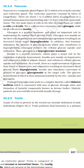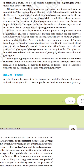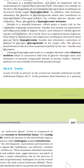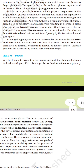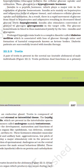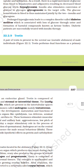Insulin is a peptide hormone which plays a major role in the regulation of glucose homeostasis. Insulin acts mainly on hepatocytes and adipocytes, enhancing cellular glucose uptake and utilization. As a result, there is a rapid movement of glucose from blood to hepatocytes and adipocytes, resulting in decreased blood glucose level, i.e. hypoglycemia. Insulin also decreases conversion of glucose to glycogen and gluconeogenesis in the target cells. Blood glucose homeostasis is thus maintained jointly by insulin and glucagon. Prolonged hyperglycemia leads to a complex disorder called diabetes mellitus, associated with loss of glucose through urine and formation of harmful compounds known as ketone bodies. Diabetic patients are successfully treated with insulin therapy.